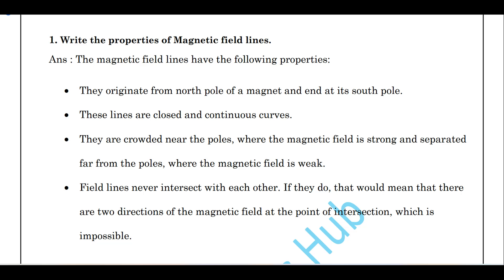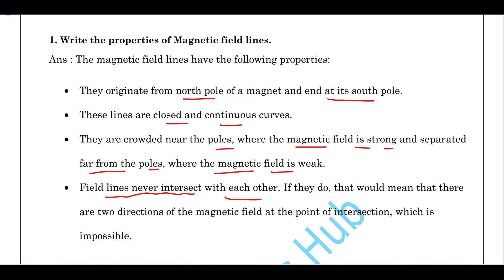Write the properties of magnetic field lines. Magnetic field lines originate from the north pole of the magnet and end at its south pole. These lines are closed and continuous curves. They are crowded near the poles where the magnetic field is strong, and separated far from the poles where the field is weak. Magnetic field lines never intersect because if they did, it would mean two directions of the magnetic field at one point, which is impossible.